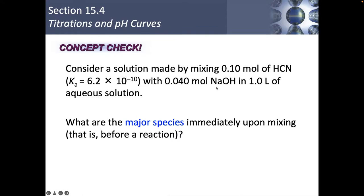Before we go into any of the actual math of a titration, let's review a little bit about weak acids and bases and how their equilibria work. So let's consider a solution that is made by mixing 0.1 moles of HCN — that's the Ka of HCN — with 0.04 moles of NaOH in one liter of aqueous solution.